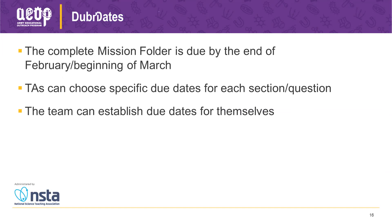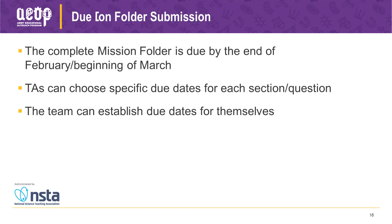Make sure everything is done and submitted by the submission deadline — the beginning of March this year. Rather than making it one big deadline, you can break parts of the mission folder into different milestones: for example, have the problem statement due on one date and the hypothesis written by another date. Or you can have the teams establish those due dates themselves and create their own calendar for when they'll get different parts done.